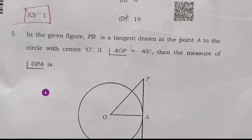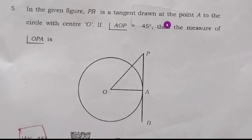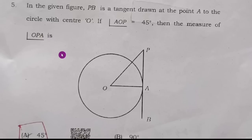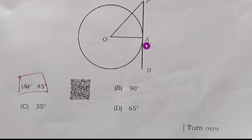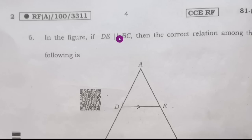Fifth question: in the given figure, PB is a tangent drawn at point A to the circle with center O. If angle AOP = 45°, then the measure of angle OPA is 45°. When a tangent is formed, there is always 90°. So 180° minus (90° + 45°) = 45°. Therefore, option A is the right answer.